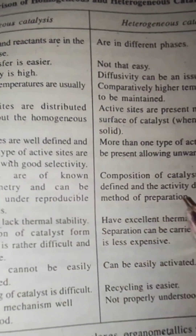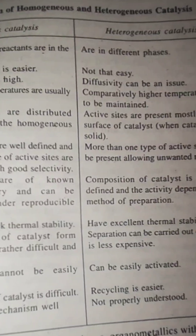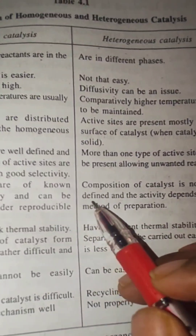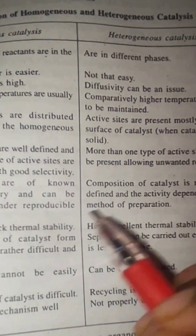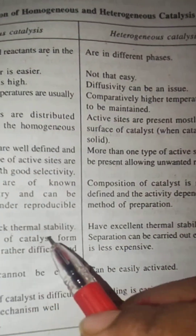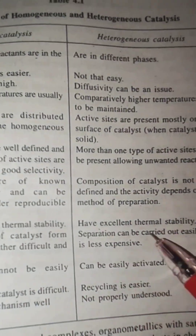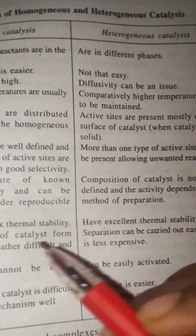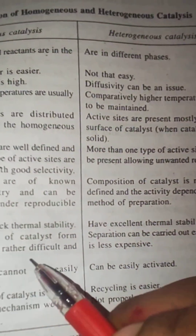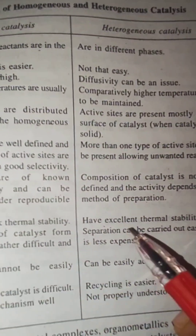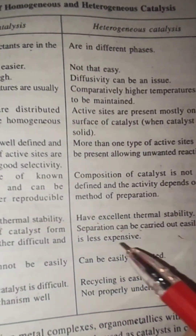In homogeneous catalysis, the catalyst composition is known stoichiometrically and can be prepared under reproducible conditions. In heterogeneous catalysis, the composition of the catalyst is not well defined and activity depends on the method of preparation. Homogeneous catalysts lack thermal stability, whereas heterogeneous catalysts have excellent thermal stability.